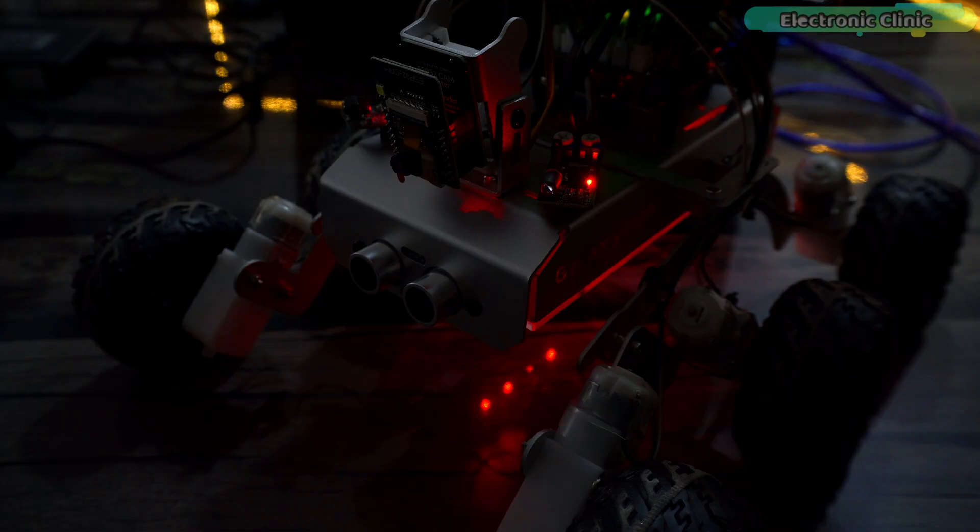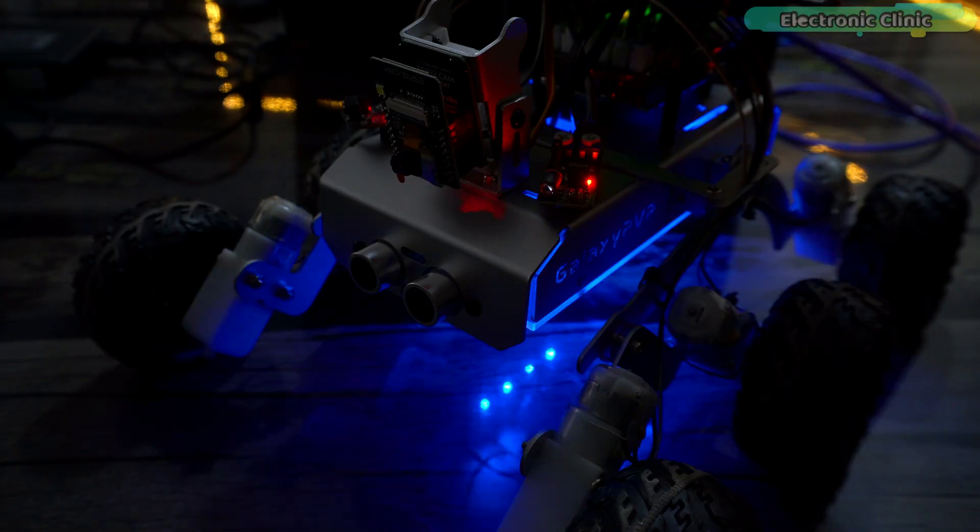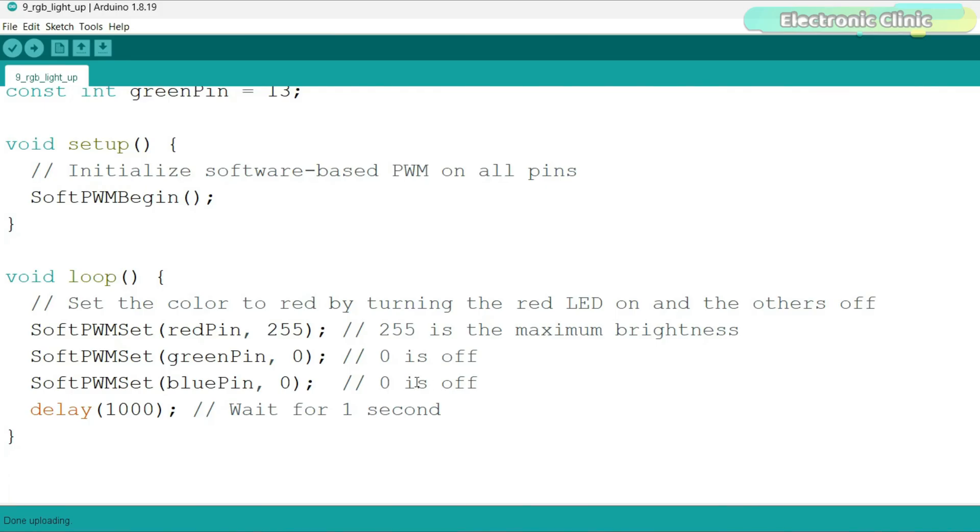With this program, we can only turn on the red, green or blue LEDs on the strips. To generate any color of our choice for this, we will need to make some changes in this code.